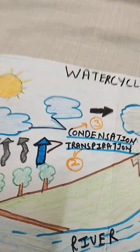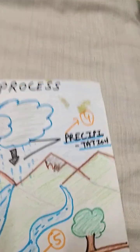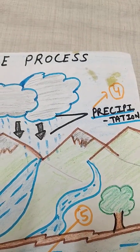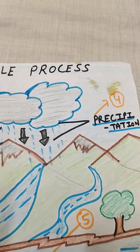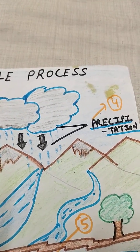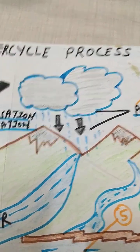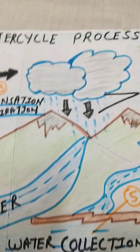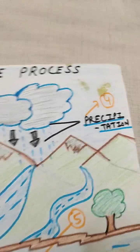The fourth point is precipitation. Precipitation means when clouds become heavy, the water falls down as rain, snow, or hail. You can see the water falling in the form of rain, snow, or hail. The last process is water collection.